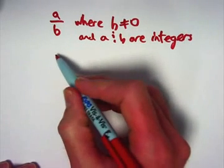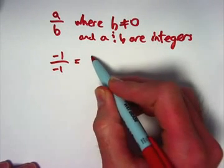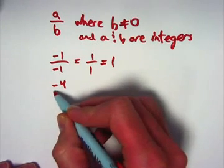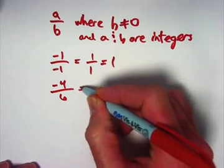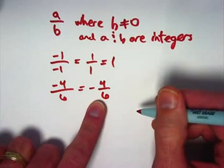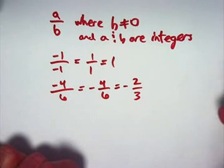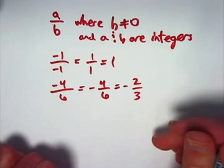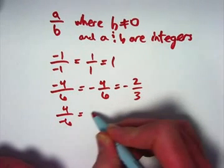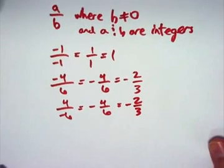I haven't used negative rational numbers in these past videos, but you can certainly have negative numbers for a and b. For example, negative one divided by negative one is the same as one over one — the two negatives make a positive, equal to one. Negative four over six: you can bring the negative sign out in front and think of that as negative four-sixths, the additive inverse of four-sixths, which reduces to negative two-thirds. These are all equivalent fractions.